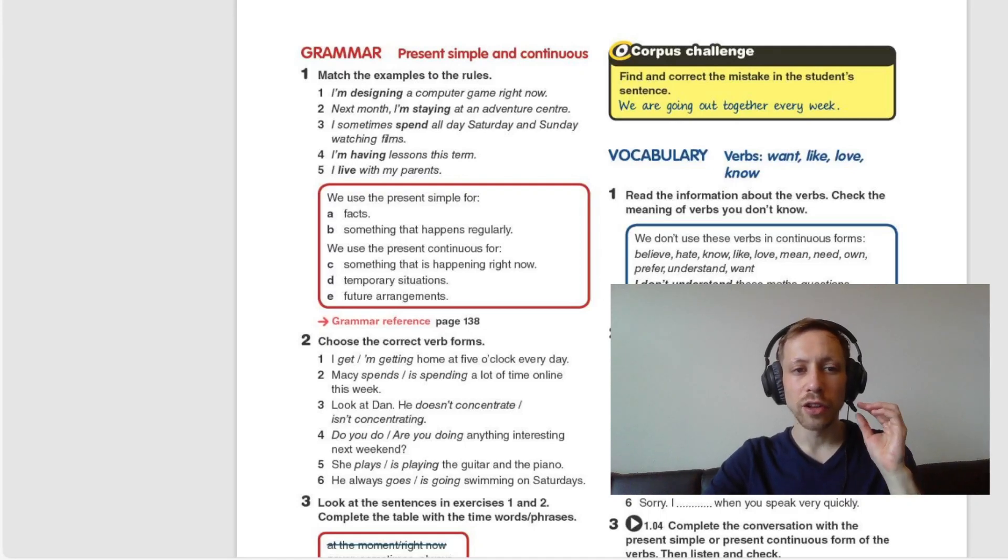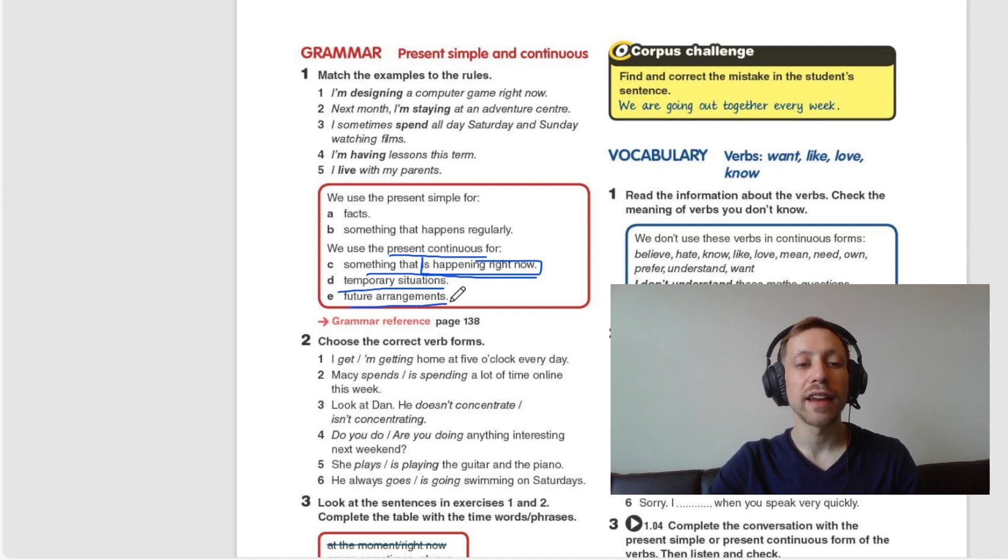Now, let's look for the Present Continuous. We use Present Continuous for something that happens right now, something that is happening right now. Number two, Temporary Situations. And number three, Future Arrangements, that is Future Plans or Plans for the Future.